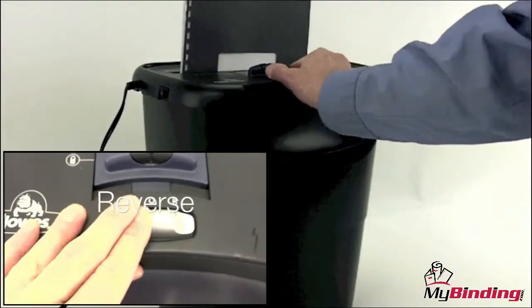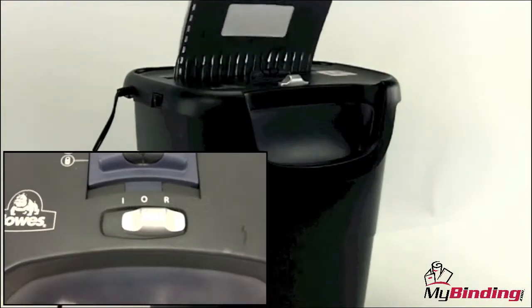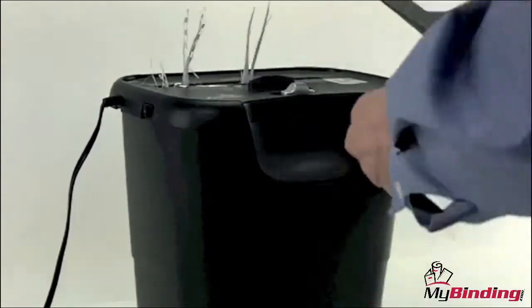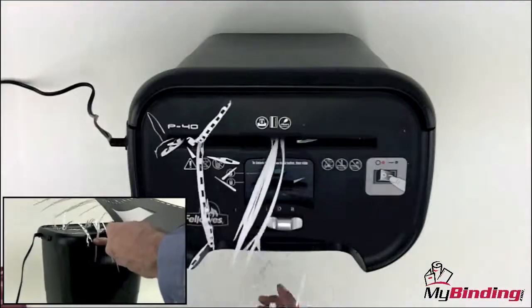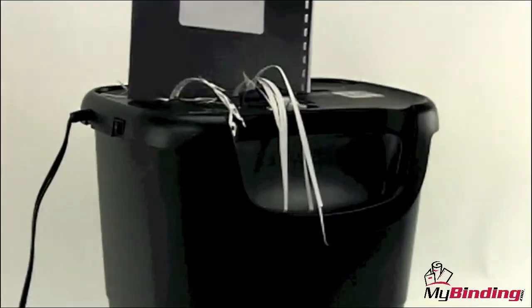The reverse feature seems to work flawlessly and with a quick response time, so taking care of jams will be easy. The paper entry width is 9 inches wide and the shred strips are a quarter inch in width.